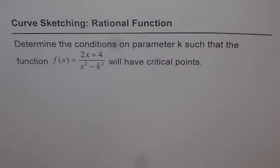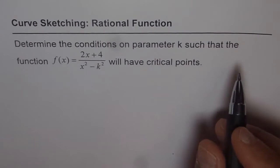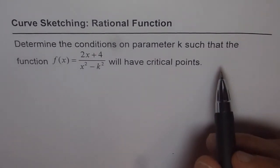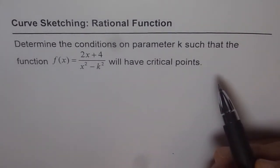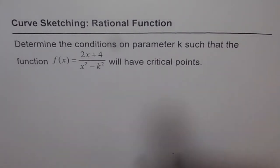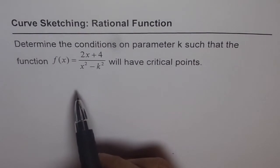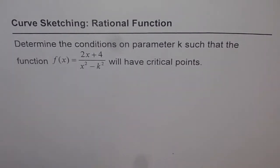We always find critical points for a function to figure out increasing and decreasing intervals and local maximum and minimum values. Critical points are the points where the first derivative of the function is 0. Let's figure out when this function will have 0 for the first derivative.